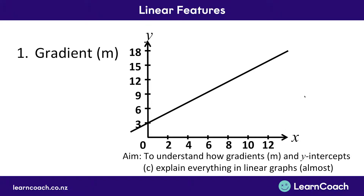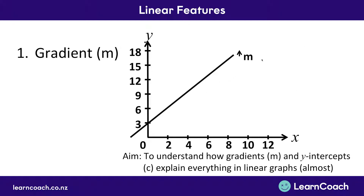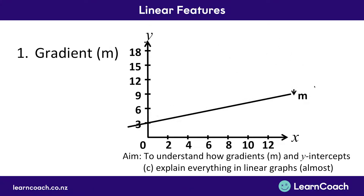First of all, let's look at the gradient, which is called m. The gradient means the slope — it's how steep the line is. This line has a bit of steepness and goes upwards, but it could be a little steeper, and that would mean the gradient m has increased. Or it could be a more shallow line, not quite as steep, and in that case it would have a lower gradient — a smaller number representing its slope.